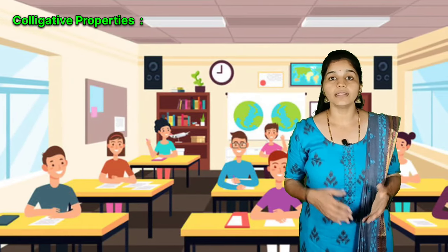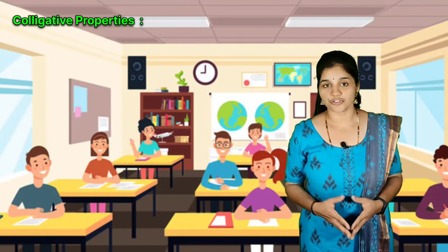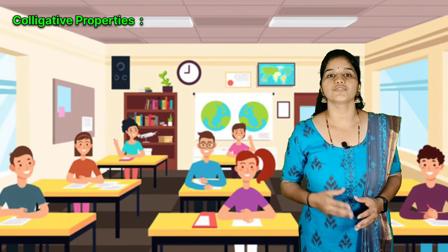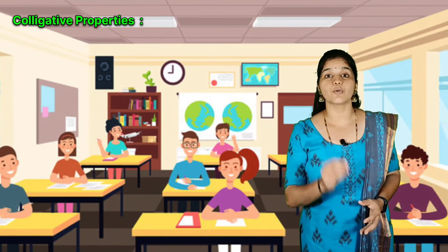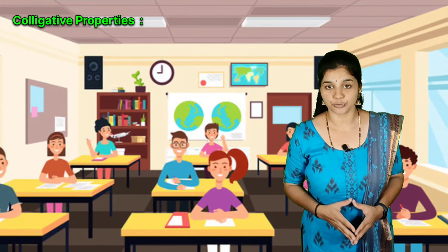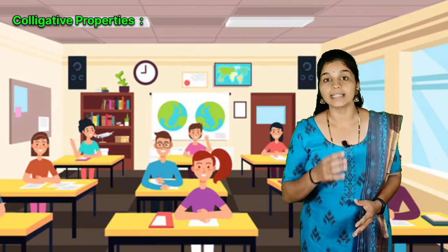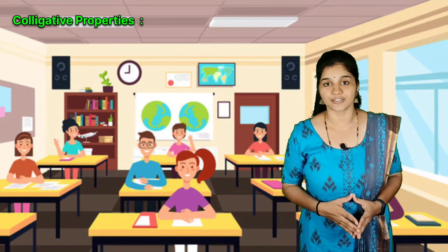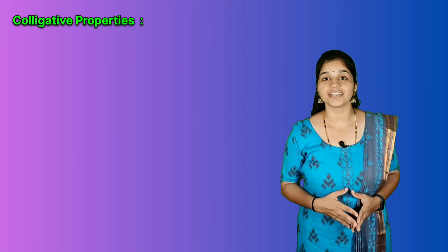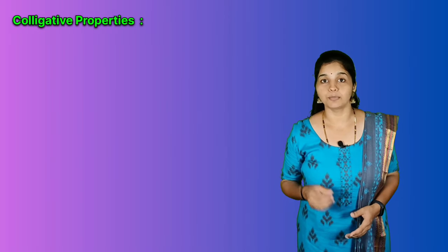As an example, if I speak about the strength of students in a school, it depends only on the number of students studying in that school. Whether a student is a boy or a girl, whether the student is tall or short, does not affect the strength of the school. Strength of the school depends only on the number of students and not on the nature of students. Now let us discuss colligative properties one by one and see how we can determine the molar mass of the solute using these colligative properties.